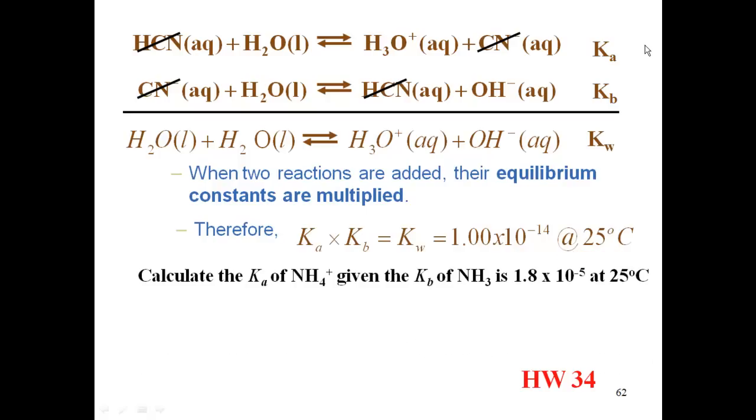So how would we use this? Let's say, for instance, I want to calculate the Ka of ammonia ion given the Kb of ammonia is 1.8 times 10 to the negative 5th at 25 degrees C. What we're saying is, let's say I had some ammonia chloride and I was trying to find the pH of something, trying to find the pH of that ammonia chloride.